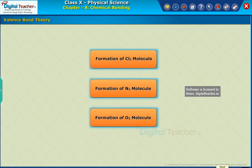Let us learn about the valence bond theory using the examples of the formation of chlorine, nitrogen, and oxygen molecules.